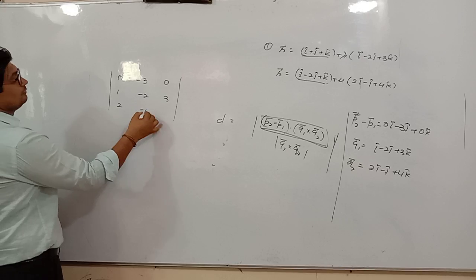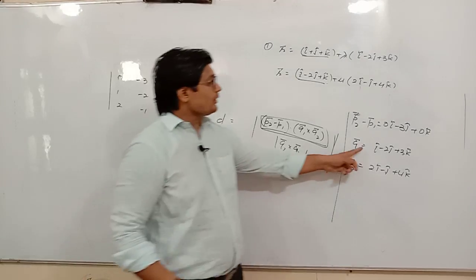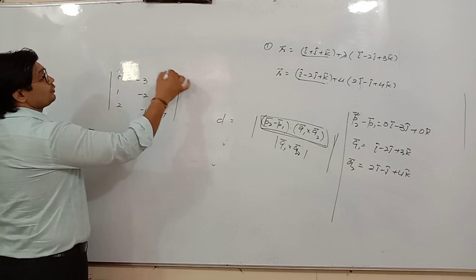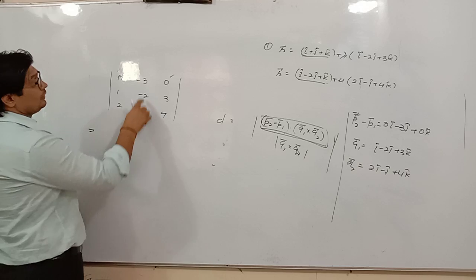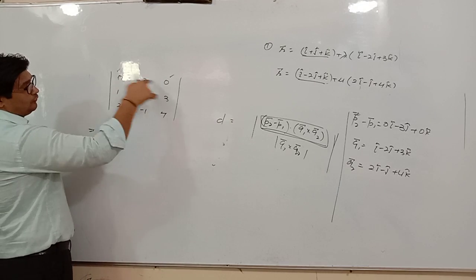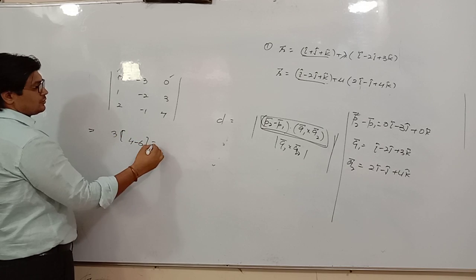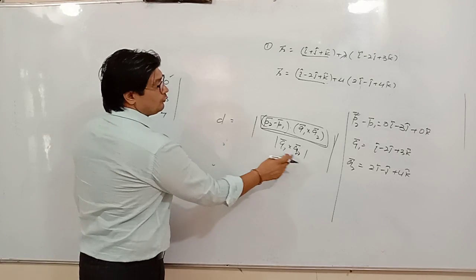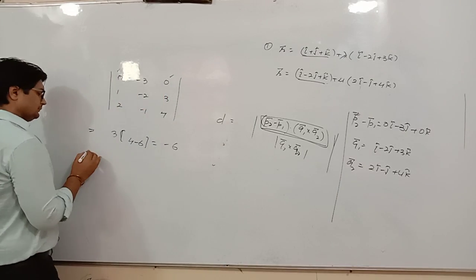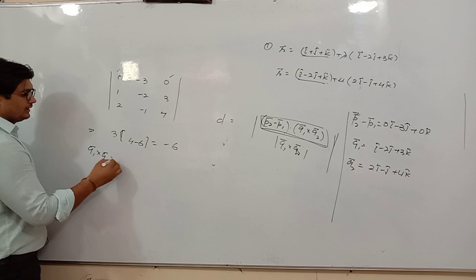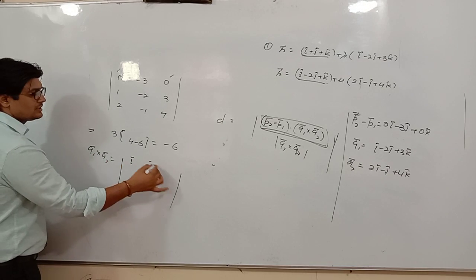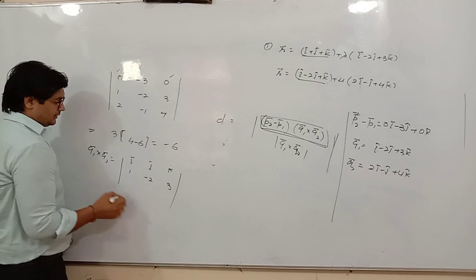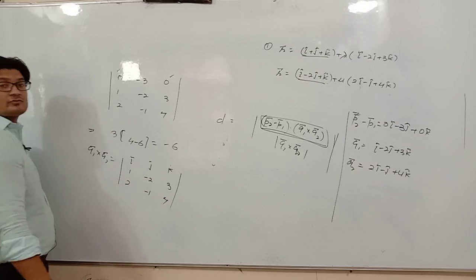Now we solve. First the numerator: (P2 - P1) dot (Q1 × Q2). The value comes to -6. Now for Q1 cross Q2, we set up the determinant with i, j, k in the first row, Q1 coefficients 1, -2, 3 in the second row, and Q2 coefficients 2, -1, 4 in the third row.